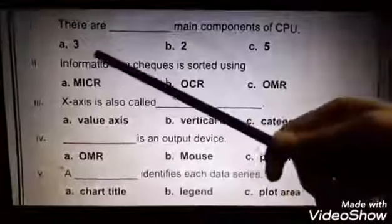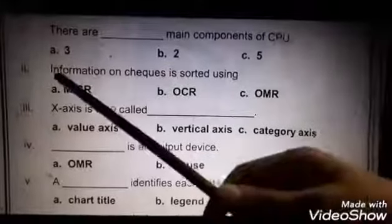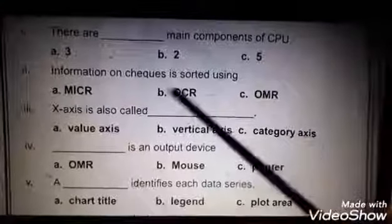Number one: There are dash main components of CPU. Option A: 3, B: 2, C: 5. Right answer is 3. Aap ne is ko blank mein bhi likhna hai.